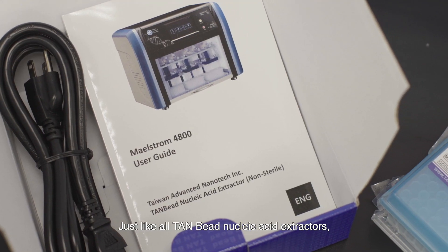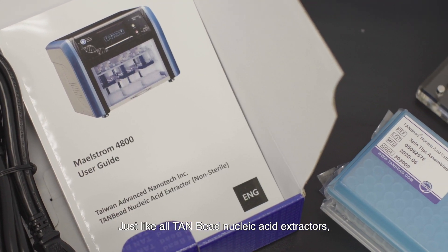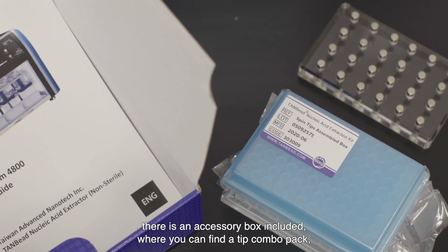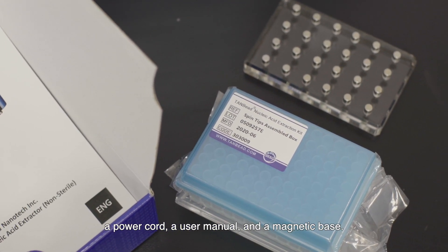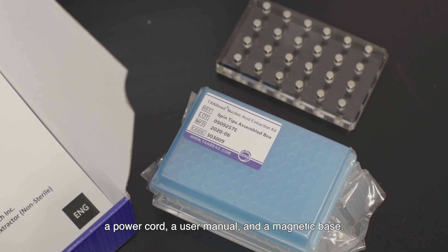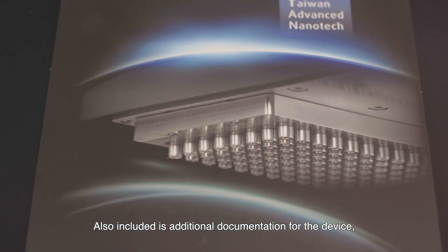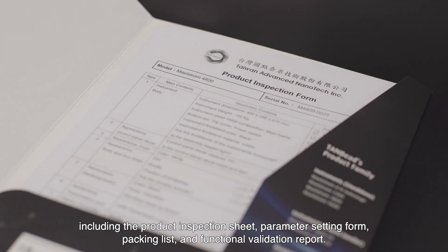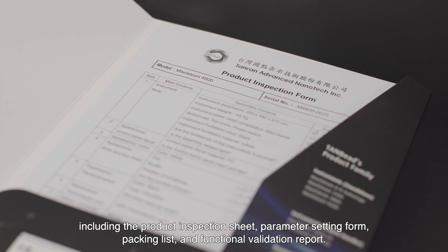Just like all Tambead nucleic acid extractors, there is an accessory box included where you can find a tip combo pack, a power cord, a user manual and a magnetic base. Also included is additional documentation for the device including the product inspection sheet, parameter setting form, packing list and functional validation report.